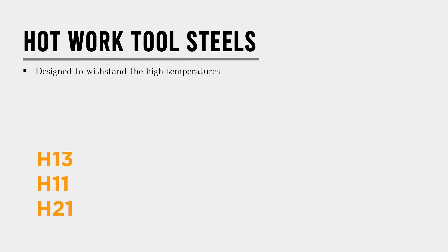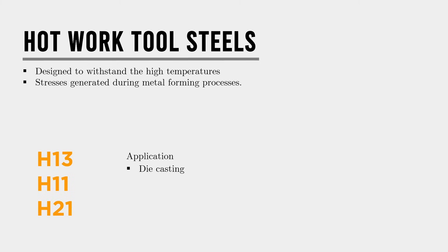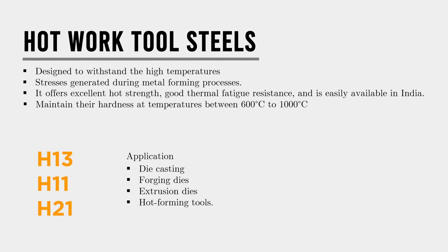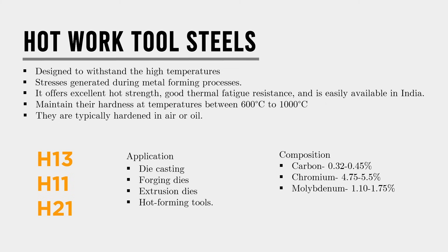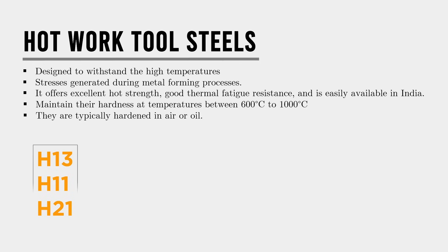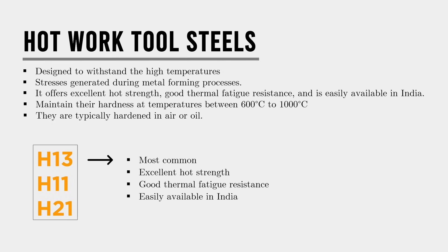Hot work tool steels, also called the H group, are designed to withstand the high temperatures and stresses generated during metal forming processes. They are commonly used in applications such as die casting, forging dies, extrusion dies, and hot forming tools. These steels maintain their hardness at high temperatures between 600°C and 1000°C and are typically hardened in air or oil. They contain alloying elements like chromium, molybdenum, and vanadium. Popular grades are H13, H11, and H21 — among them, H13 is most common, offering excellent hot strength, good thermal fatigue resistance, and is easily available in India.